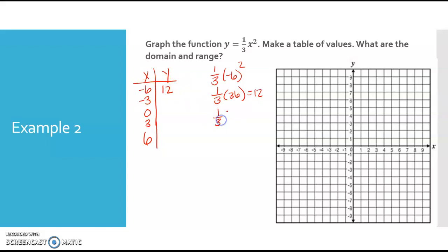And then I just continue that. So 1/3 times negative 3 squared, so 1/3 of 9, and 9 divided by 3 is 3. I plug in 0. 1/3 of 0 squared equals 0, because 0 squared is 0 times a third doesn't matter. It's still 0.